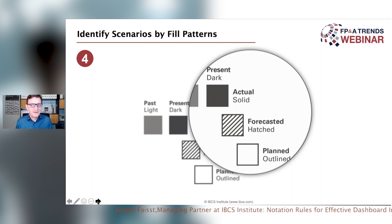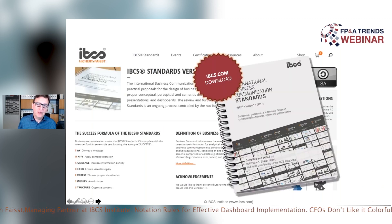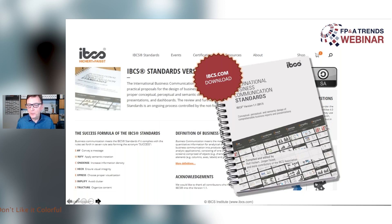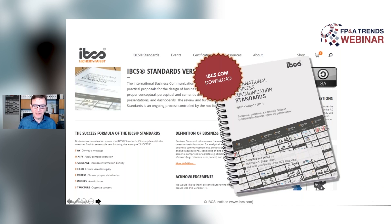There are actually many more rules. If you are interested, go to ibcs.com — at ibcs.com/standards you will find those standards. You can register and discuss with the IBCS Association, which is an open community like Wikipedia: a creative commons initiative where business analysts worldwide define their own language. Visit ibcs.com and register.